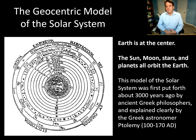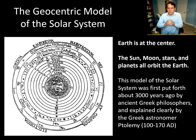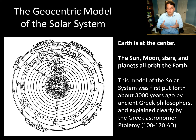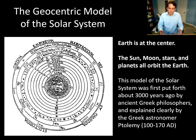Throughout history there have been many different ideas about Earth's place in the universe. We're not going to spend a lot of time on geocentric models, but we'll touch on them to give a high-level view of how our understanding developed over the centuries — and to illustrate the scientific method: the constant process of gathering data, testing models, revising, and testing again.